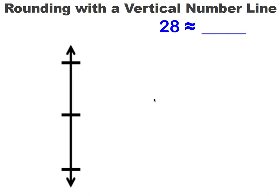Let's learn about rounding with a vertical number line. We'll start with the number 28. We're going to round this to the nearest 10. We'll need to find between what two tens is 28.